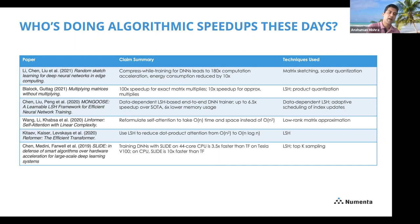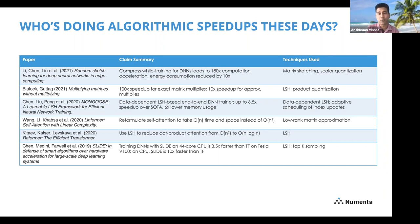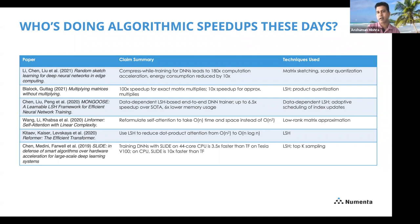The second paper is 'Multiplying Matrices Without Multiplying,' which recently got a lot of attention on Hacker News. They achieve 100x speedups for exact matrix multiplies and 10x speedups for approximate multiplies. The way they do it is by hashing — not repeating computations. They use a bit of locality-sensitive hashing and a lot of product quantization, plus hardware-specific optimizations leveraging the AVX-512 instruction set to get that last marginal speed bump.